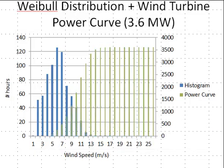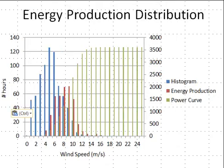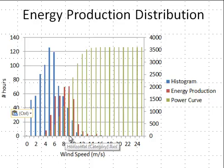Let's go ahead and show what happens when you multiply those together. You get the red chart here in the middle. You might notice that the peak of this chart — the wind speeds that provide the most power and energy — are in the eight to nine meters per second range.